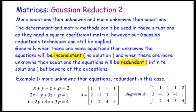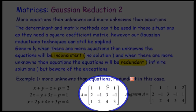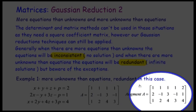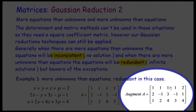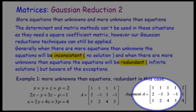The first example: we've got x plus y plus z plus p equals 2, 2x minus y plus 3z minus p equals 1, and 2x plus 2y plus 4z plus 3p equals 4. So we've got three equations and four unknowns — more unknowns than equations. As you know, we normally go through the procedure of forming matrix A, and then we augment the matrix by adding the constants from the right-hand side of the equal sign as the last column: 2, 1, and 4.